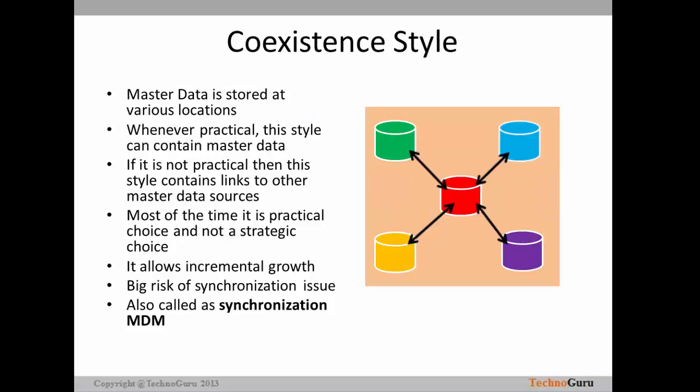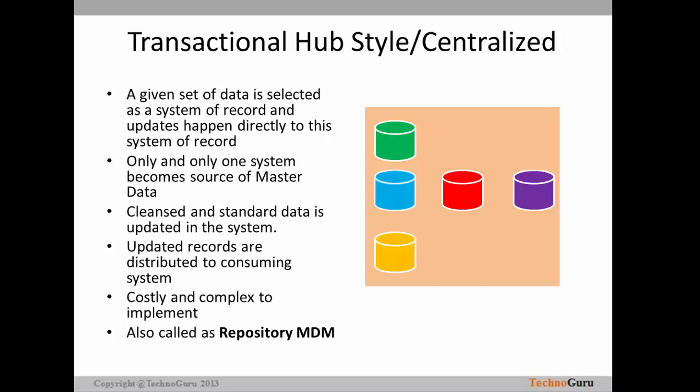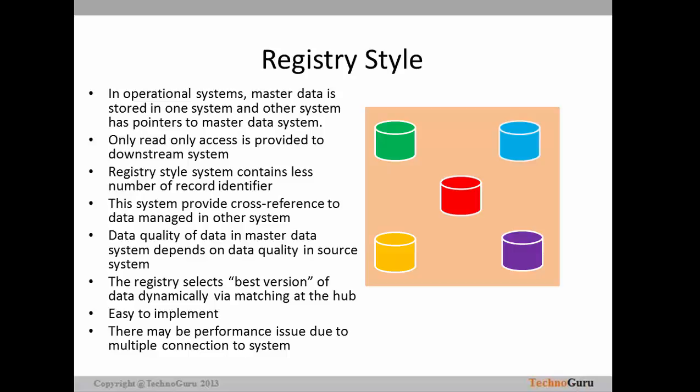The third style is the registry style. So far we have seen the co-existence style and the transactional hub style. In the registry style, within the operational system, master data is stored in one system and other systems have pointers pointing to the master data system. For example, the core MDM stores the master data, and the ODS (Operational Data Store) systems maintain pointers or links pointing back to the master database.